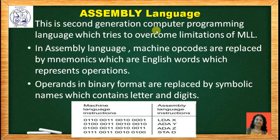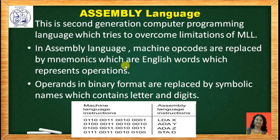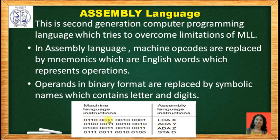Next is assembly language. This is the second generation computer programming language which tries to overcome the limitations of machine level language. In assembly language, machine codes in machine level language are replaced by mnemonics, which are English words that represent some operations. Operators in binary format are replaced by symbolic names which contain letters and digits. As you can see in this figure, the first part is the machine level instruction and the second part is the assembly language instruction. Here, operation codes are replaced by mnemonics like LDA, ADA, HTA, and data or operands are replaced by symbolic names X, Y, Z, D.